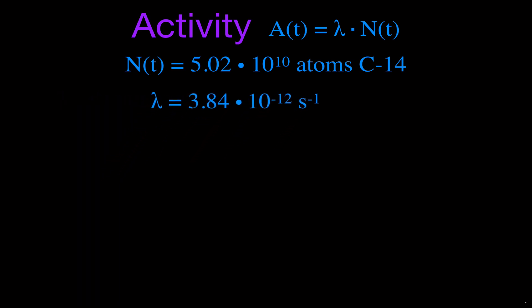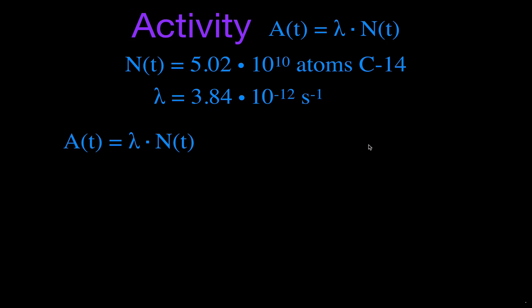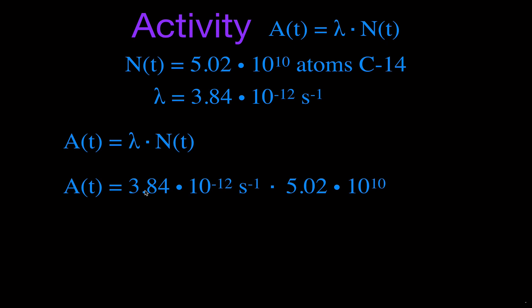Now we have both the number of radioactive nuclei and the decay constant, so we can plug them into our equation. Activity = λ × N(t) = (3.84 × 10⁻¹²  s⁻¹) × (5.02 × 10¹⁰). Carbon-14 is always decaying, but you're always taking up more carbon-14 when you eat plants and animals, so the amount of carbon-14 in your body is constant, and therefore its activity is constant.